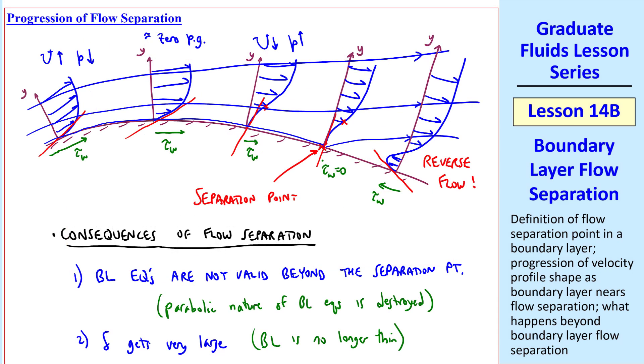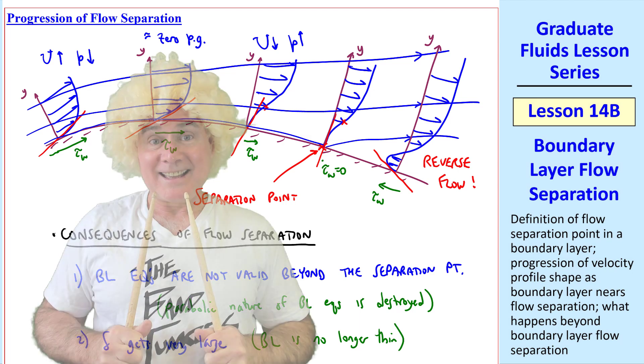When I was an undergraduate, I ran lots of boundary layer codes, and CFD was just coming of age, and we would run the boundary layer code up to the separation point, and then we'd have to stop. Now you just solve the whole thing using the Navier-Stokes equation with a CFD code.